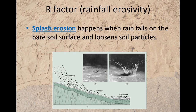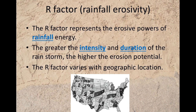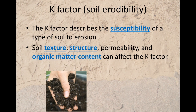Splash erosion happens when water falls on bare soil surface and loosens soil particles. The rainfall erosivity, or R factor, represents the erosive power of rainfall energy. The greater the intensity and duration of the rainstorm, the higher the erosion potential. The R factor varies with geographic location.